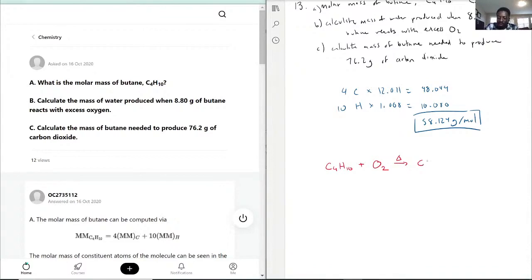It's going to be CO2 plus H2O in gas form. Now with that being said, we have to balance our equation. So we have four carbons here meaning that we need four CO2, and we have 10 hydrogens here meaning that we need five H2O.